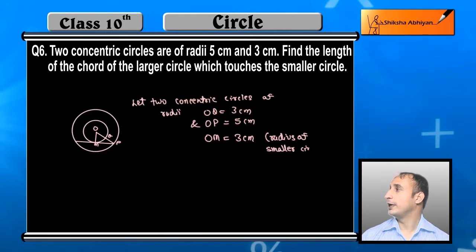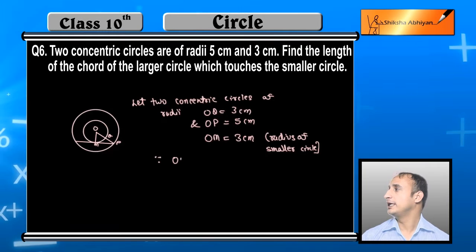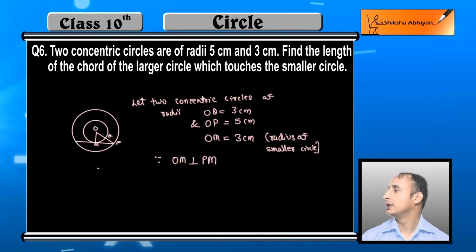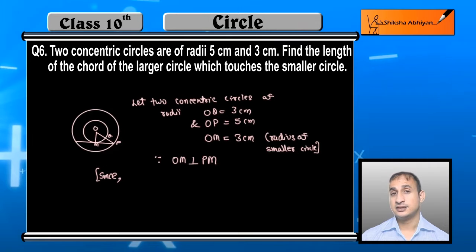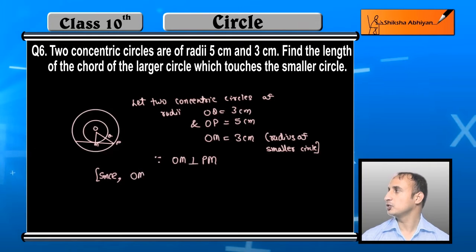Now OM is perpendicular to PM because PM is a tangent and OM is a radius, and radius is perpendicular to the tangent. So OM is perpendicular on PM.